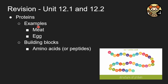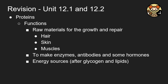Now let's talk about proteins. Examples include meat and eggs. The building blocks of proteins are amino acids, as shown in the cartoon diagram. The functions of proteins are providing raw materials for growth and repair — such as hair, skin, and muscles — and making enzymes, antibodies, and some hormones. In critical situations, proteins can also be used as an energy source, but only after glycogen and lipids are used up.